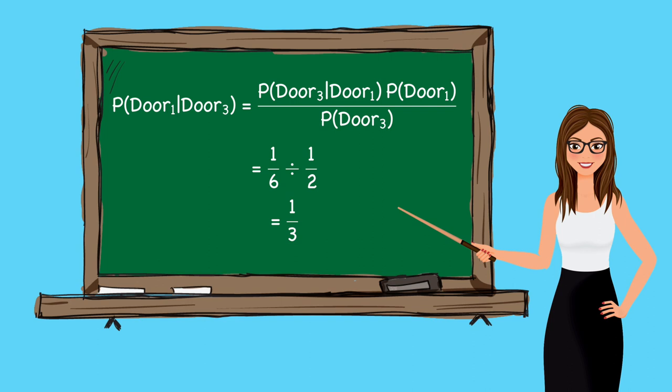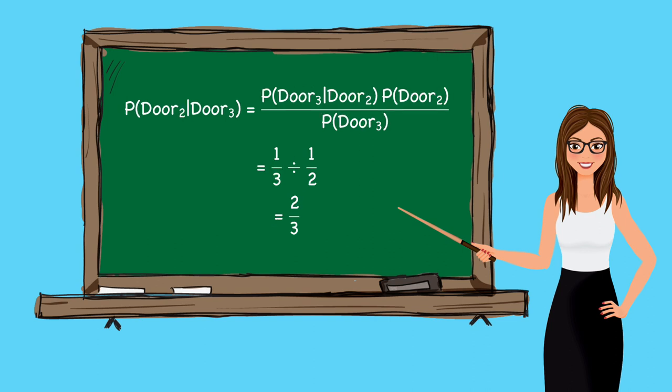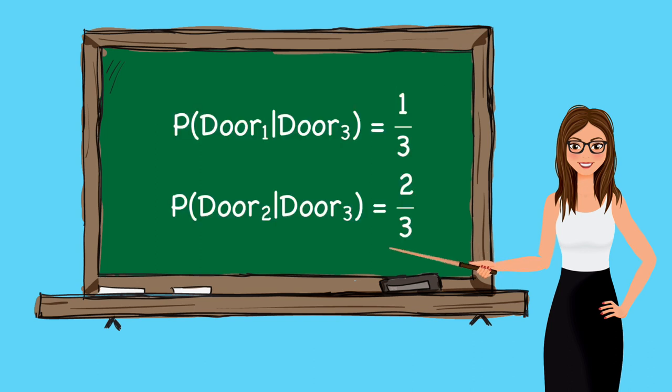Finally, we can calculate the posteriors. For the car behind door number 1, we have one-sixth over one-half, or one-third. Now for the case where the car is behind door number 2, we have one-third over one-half, or two-thirds. Thus, we have a two-thirds chance of finding the car if we switch to door 2, versus only a one-third chance if we stick with door 1. I find it fascinating that the answer can be so at odds with our intuition. But this is part of the beauty of mathematics.